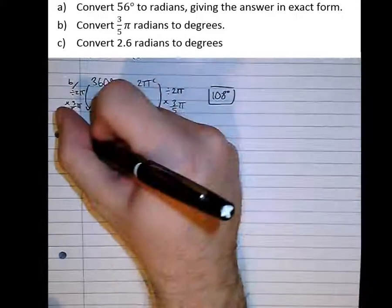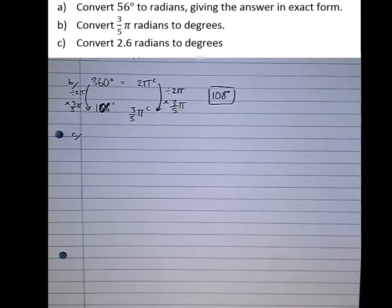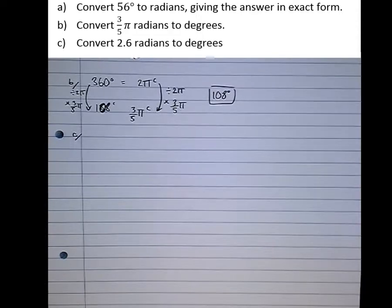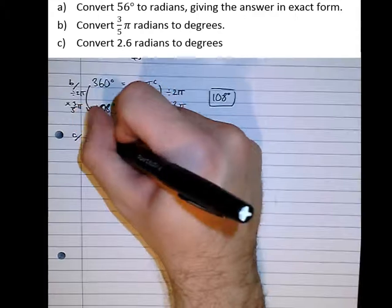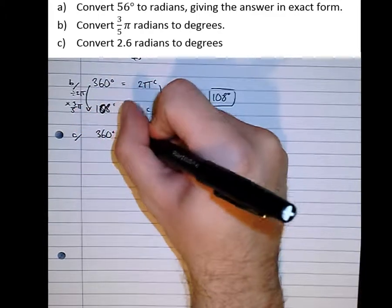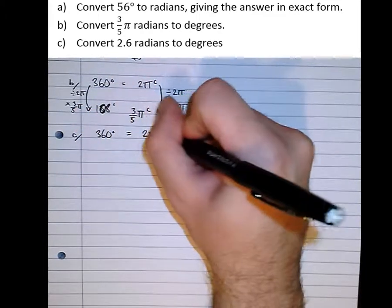Now the third part, a little bit more confusing because the radians doesn't have a π attached to it. It's 2.6 radians, not 2.6π radians, so we're going to try and convert that to degrees. So part C, let's start off with our fact that we know to be true again, 360 degrees is 2π radians.